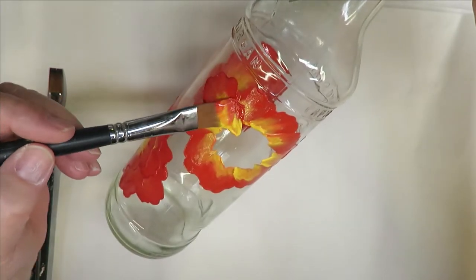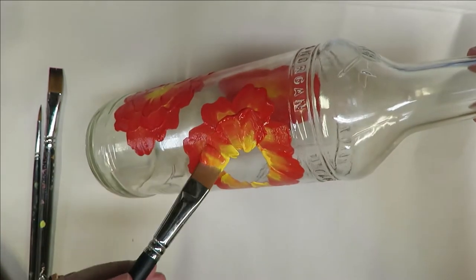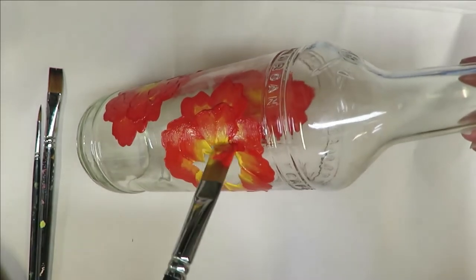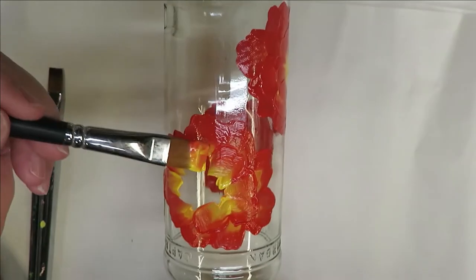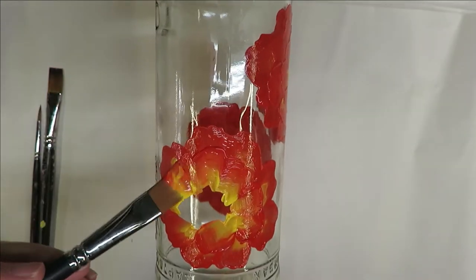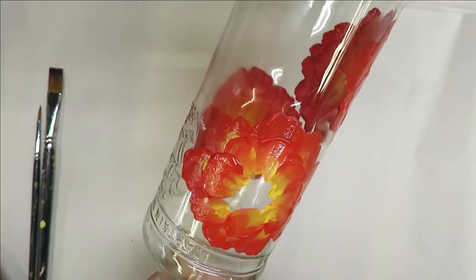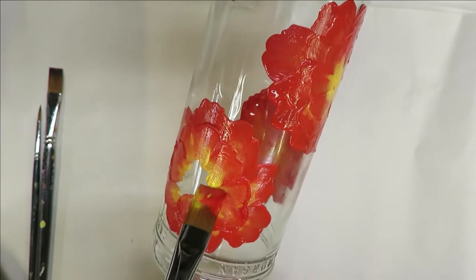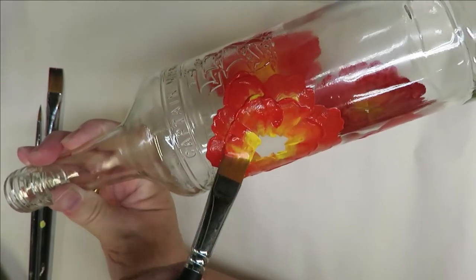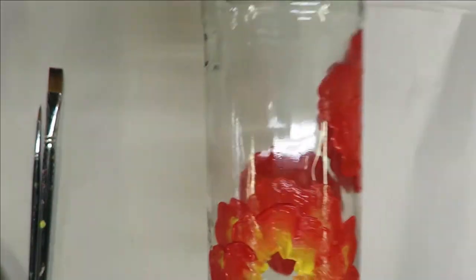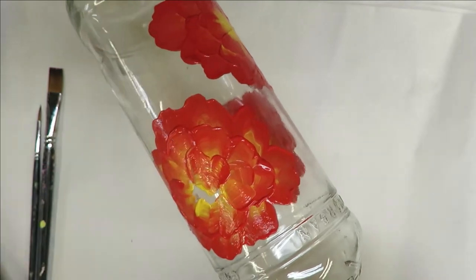You can make these a little bit smaller if you want to have more blooms on your bottle, and you can actually make these bigger if you want to have more yellow showing from underneath. I'm just doing three layers on mine. If you want to do more, you can.